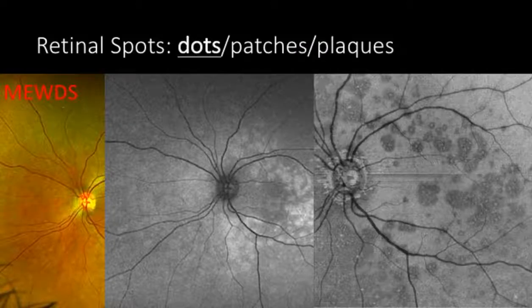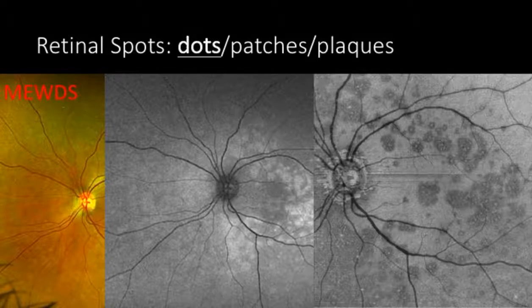Let's move to the second part of our differential diagnosis and focus on the retinal spots. When you see a patient with retinal spots on fundus examination, the first thing to consider is the shape of these spots. A patient may present with dots — as in this patient who has very circular dots at the posterior pole that were hyper-autofluorescent, associated with outer retinal disruption on OCT — and this is a case of classic MEWDS.